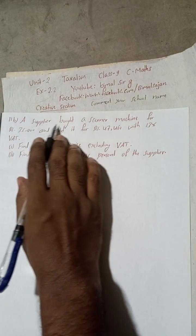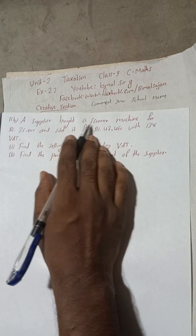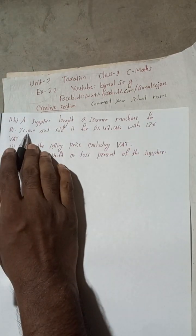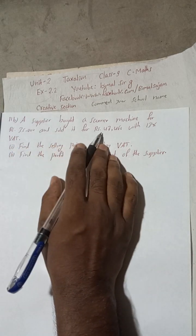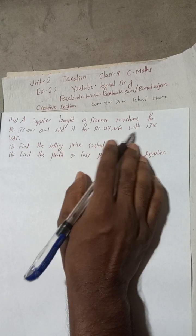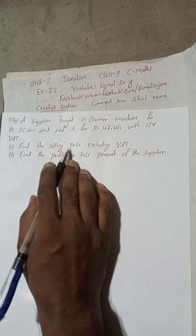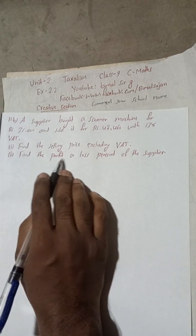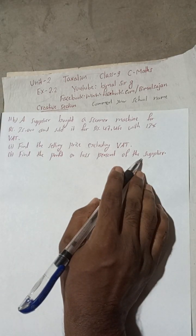Let's begin the solution. A supplier bought a scanner machine for Rs. 35,000 and sold it for Rs. 47,460 with 13% VAT. Find the selling price excluding VAT. Find the profit or loss percent of the supplier.